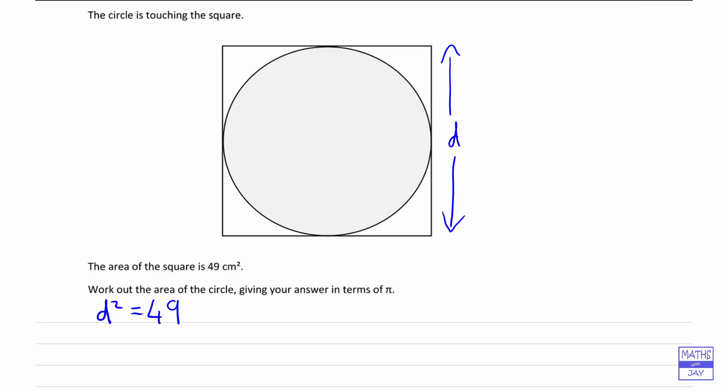So the formula for the area of a circle is that A is pi times r squared. So first of all, we'll find what d is, then we'll be able to work out what r is and then substitute that into the formula for the area of the circle.